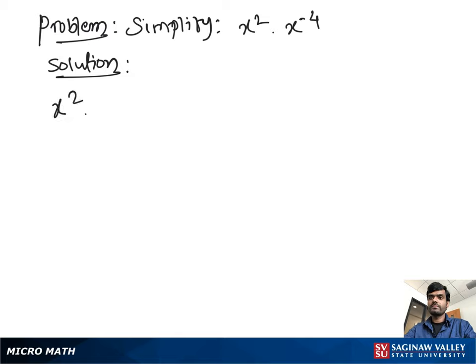Simplify x squared times x to the negative 4. We add the exponents with the same base, so we write x to the 2 minus 4. Then we get x to the negative 2.